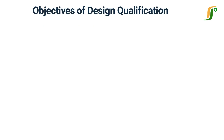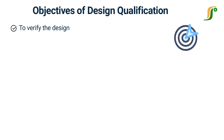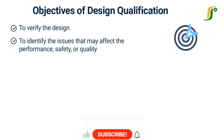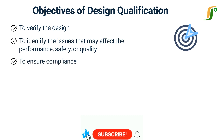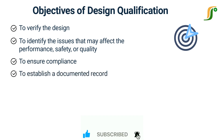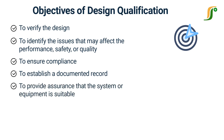Now, let us know the main objectives of design qualification. Verify that the design meets the intended requirements and specifications. Identify and address any design flaws or issues that may affect the performance, safety, or quality of the system or equipment. Ensure compliance with regulatory and quality standards. Establish a documented record of the design verification process for future reference and audits. Provide assurance that the system or equipment is suitable for its intended purpose and capable of producing safe, effective, and high-quality products or services.